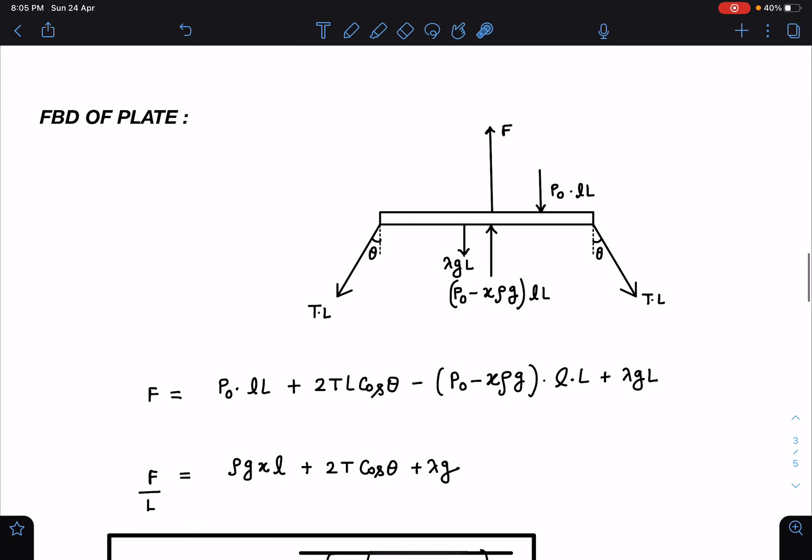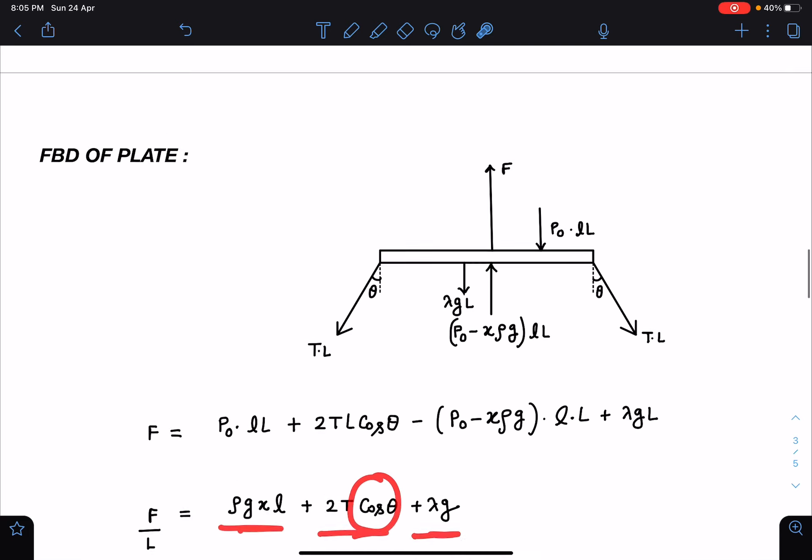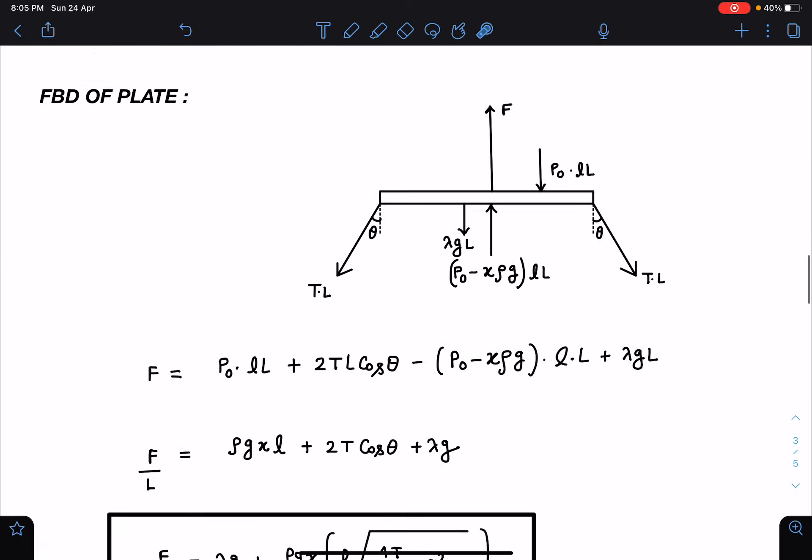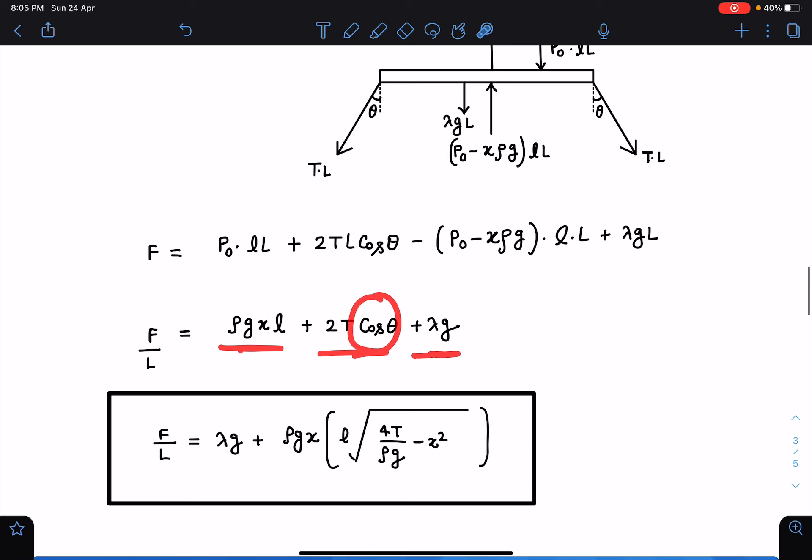You can see here we are getting this F expression and we have to find force per unit length. So I'm getting ρ g XL / 2T cos θ plus λ g. Now cos θ value I can calculate using sin θ as sin θ is known to us. So just substitute here and when you simplify this we are going to get this as the answer which is λ g plus ρ g x times L times root of 4T by ρ g minus x². And this is going to be the final answer for this problem.